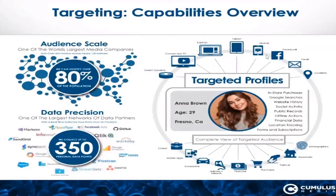Today, we are going to talk about targeting and how we can target people specifically based on what your industry is. We can actually identify 80% of the population with 350 different data points that we collect on people from smart speakers they own, connected TVs, laptops, tablets, mobile phones, other social media connected devices, places that they go, email addresses, how they vote politically, purchases that they make — all things that you can target by.